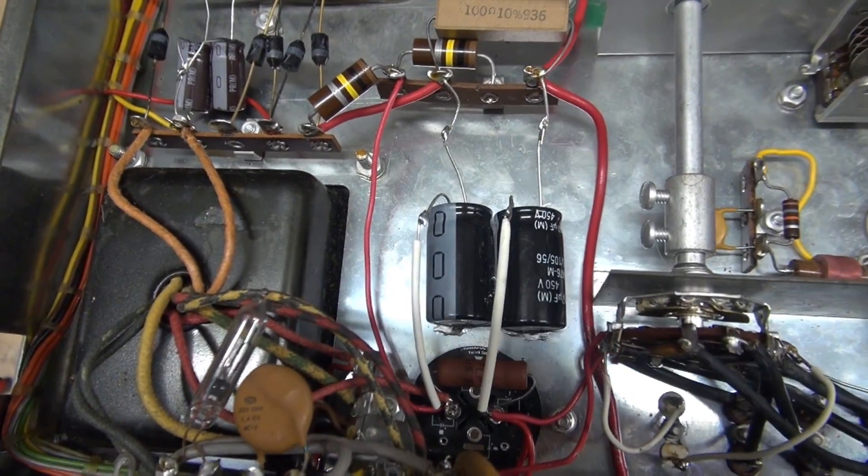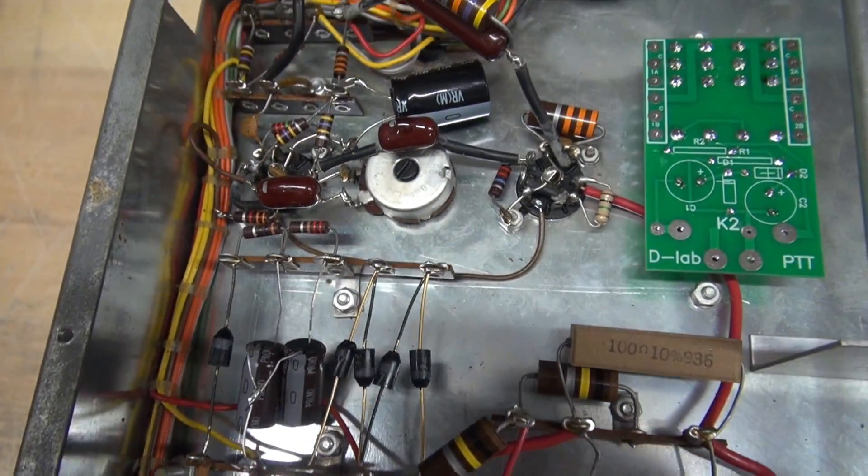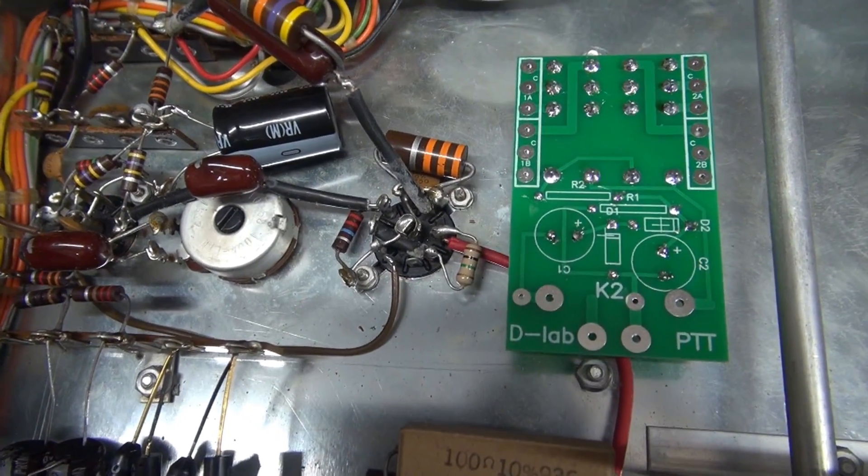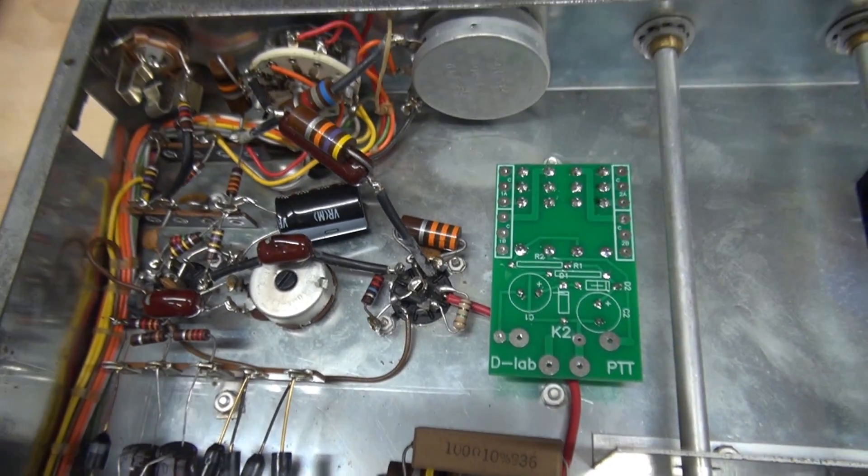All right, all the new filter capacitors are installed in the DX60B. Now we're going to install for the first time the D-Lab K2 module in this radio.